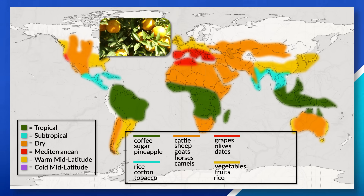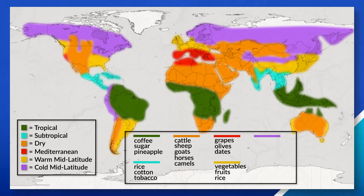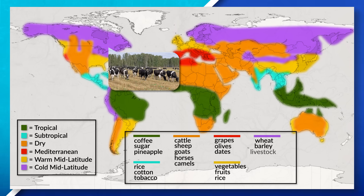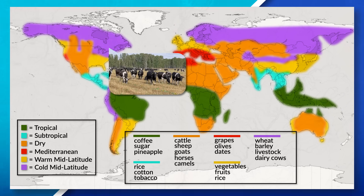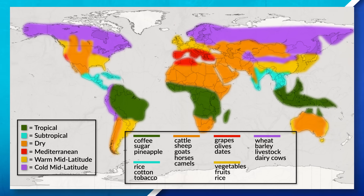Lastly, we have cold mid-latitude climates such as the north central part of the United States, southern Canada, and eastern Europe, where wheat, barley, livestock, and dairy cows are often grown and produced. Notice that each of these different climates leads to the production of different foods. This is due to the distinct physical features of an area and the climate.